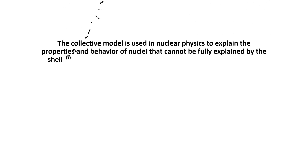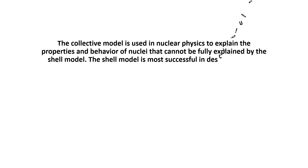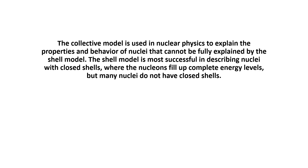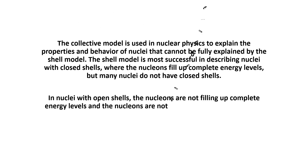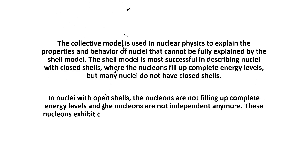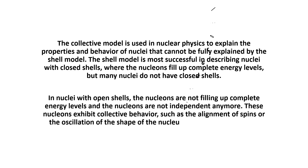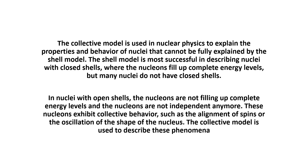The collective model is used in nuclear physics to explain the properties and behavior of nuclei that cannot be fully explained by the shell model alone. The shell model is most successful in describing nuclei with closed shells, where nucleons completely fill energy levels. But many nuclei do not have closed shells — in nuclei with open shells, the nucleons do not fill up energy levels completely and are no longer independent. These nucleons exhibit collective behavior such as alignment of spins and oscillations of the shape of the nucleus, which the collective model is used to describe.